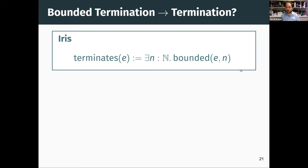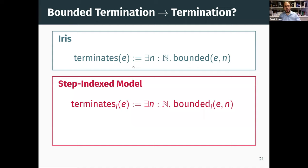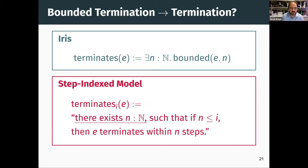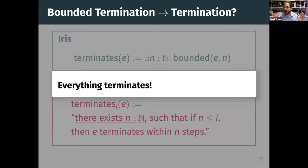You could certainly define that in Iris — that's no problem. The problem is it's trivially true. To see that, take the step-index model of this assertion. The existential just passes through the step index. So terminates_I(E) becomes exists N, bounded_I(E, N). But expanding this out: there exists an N such that if N ≤ I, then E terminates within N steps. This is trivially true for any term E and any step index I — you just pick N to be greater than I, making the condition N ≤ I false, and the whole thing becomes true. So you can prove in Iris that everything terminates, which is clearly not useful.